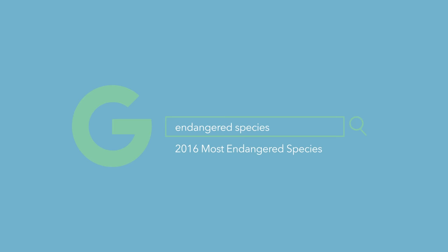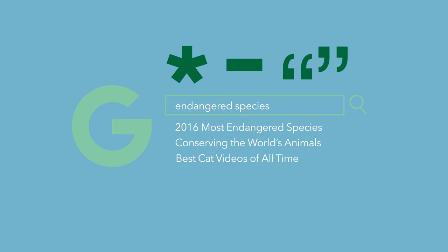First, let's talk about Google. Google's search engine is built to deliver results based on factors such as the words you type in, concepts related to those words, and even your previous search history. With a few tricks, you can tailor your Google search to return more specific results.